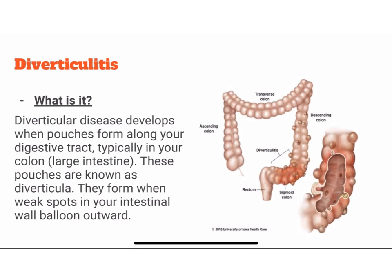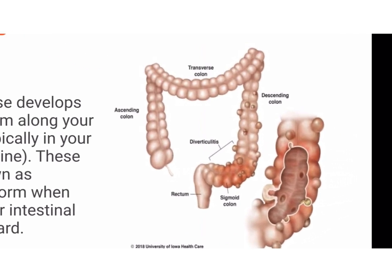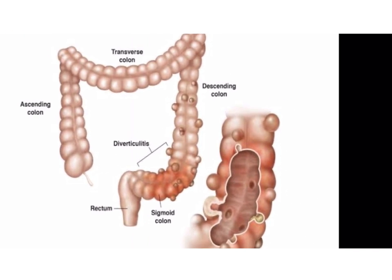Diverticulitis develops when pouches form along the digestive tract, typically in the colon. These pouches are known as diverticula. They form when weak spots in the intestinal wall balloon outwards.